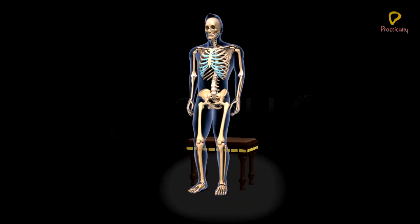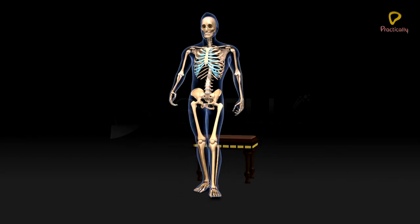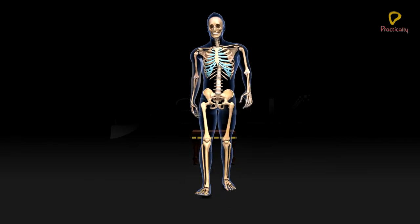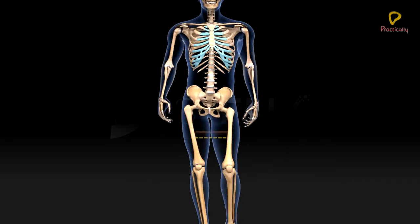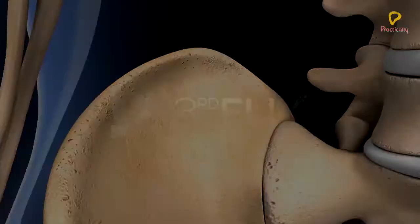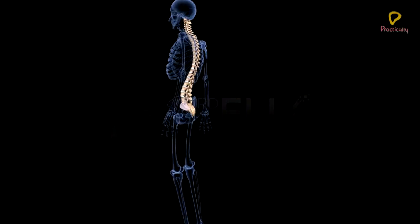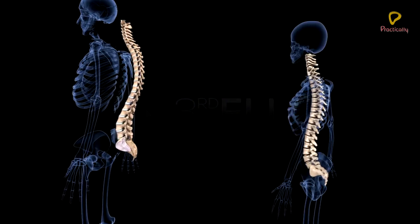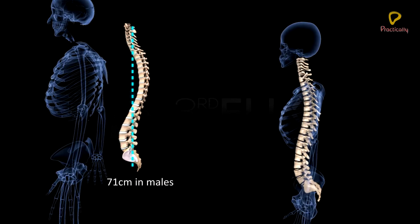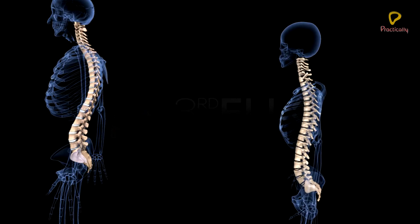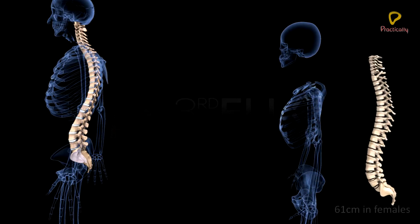These curvatures help in keeping the body straight. They also keep the center of gravity between the heels so that the erect posture is maintained during walking. The length of the vertebral column is about 71 cm in males and about 61 cm in females.